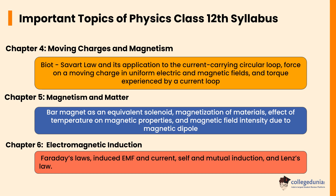Chapter 5, Magnetism and Matter, important topics are Bar Magnet as an equivalent solenoid, magnetization of materials, effect of temperature on magnetic properties, and magnetic field intensity due to a magnetic dipole.